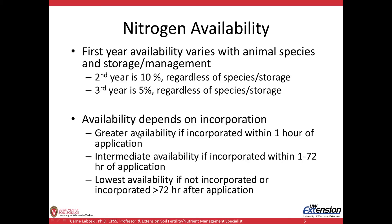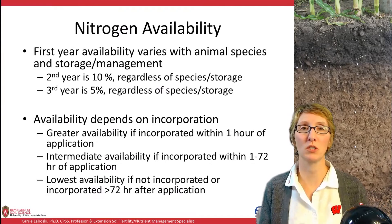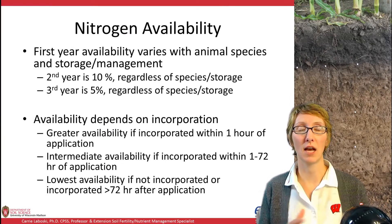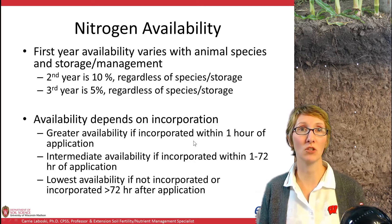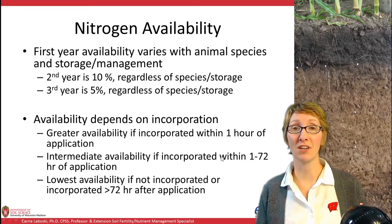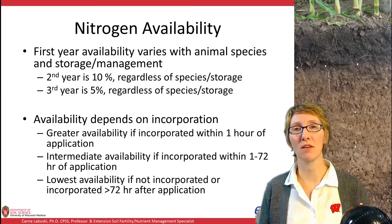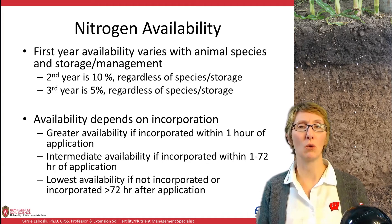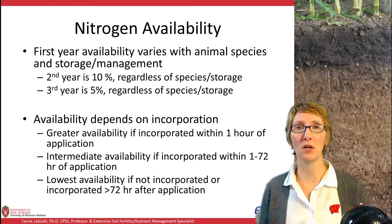The availability of nitrogen is dependent on incorporation, because ammonium can be lost mainly through volatilization. Time to incorporation is a really important factor in N availability. We have greater availability if manure is incorporated within one hour of application or is injected. We have an intermediate level of availability if it's incorporated within one to 72 hours. Our lowest availability occurs if manure is broadcast and never incorporated, or incorporated more than three days after application. The longer it sits on the soil surface, the more ammonia will volatilize.